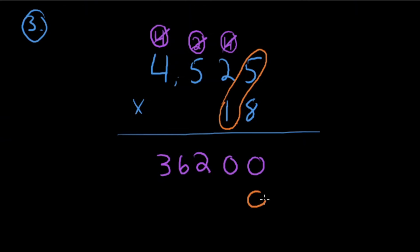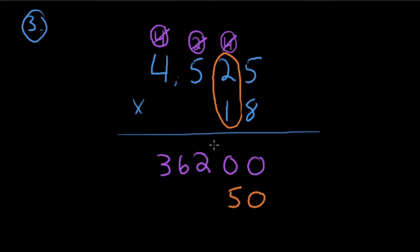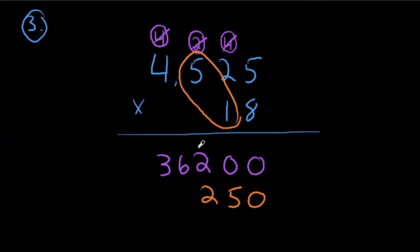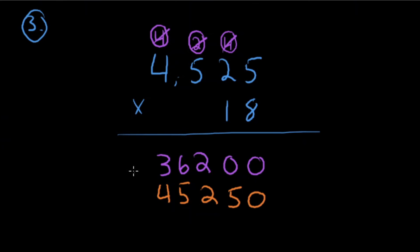Now multiplying by the tens digit, but first place a zero as our placeholder. 10 times 5: 1 times 5 is 5. 10 times 20: 1 times 2 is 2. 10 times 500: 1 times 5 is 5. 10 times 4000: 1 times 4 is 4. That's a lot of numbers — slow down, check your work, and let's get our final answer.